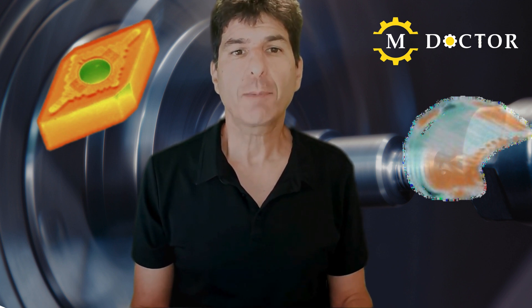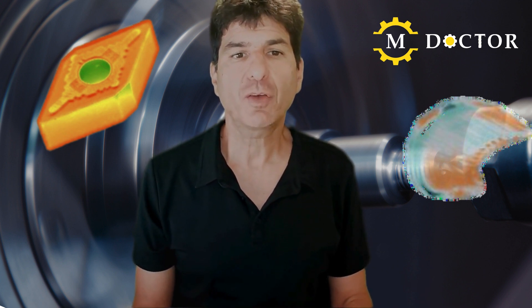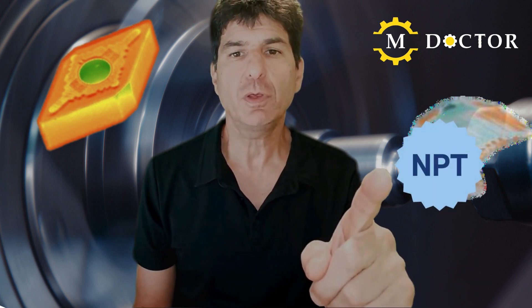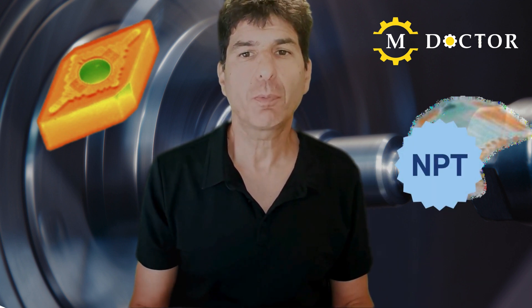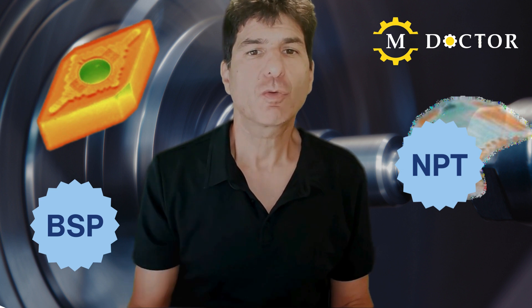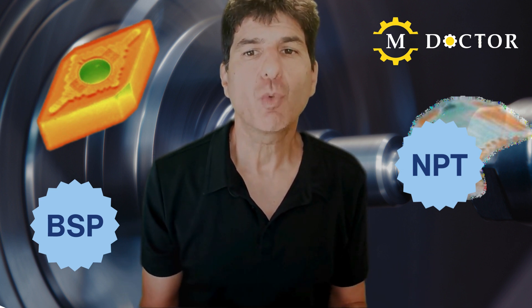The two main types of pipe thread standards are the National Pipe Thread NPT and the British Standard Pipe BSP. So what is the difference between them? Which one is better?